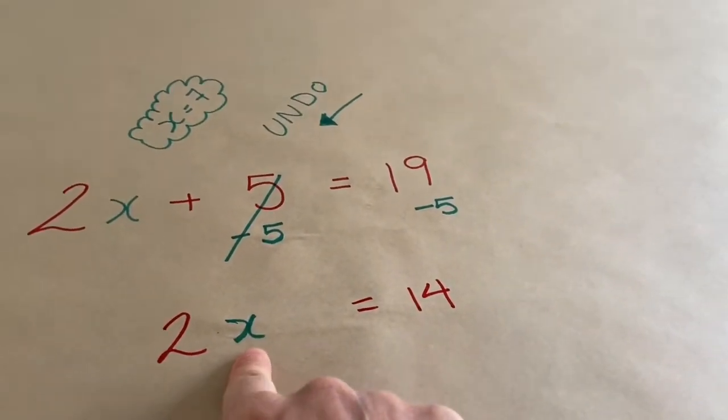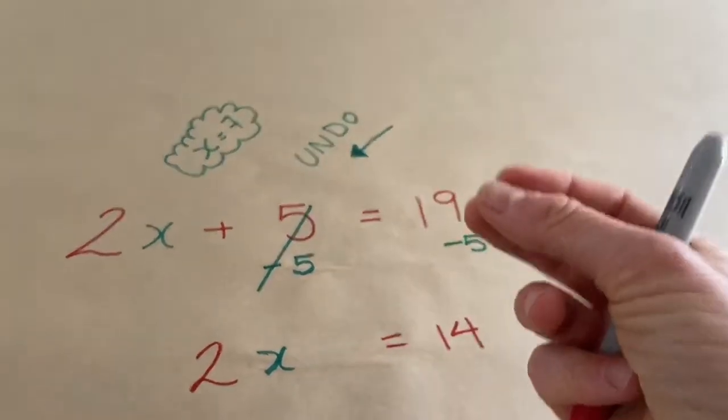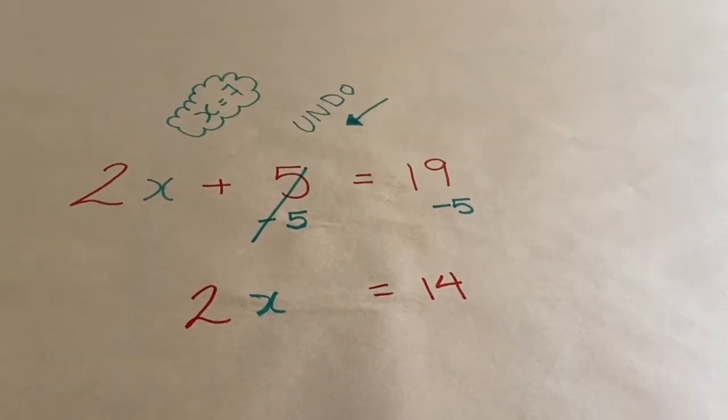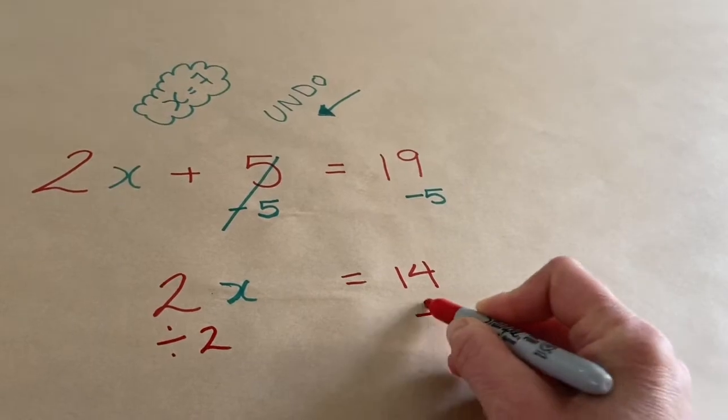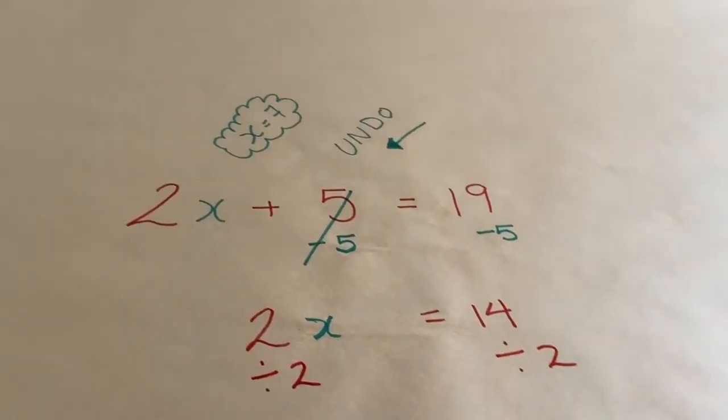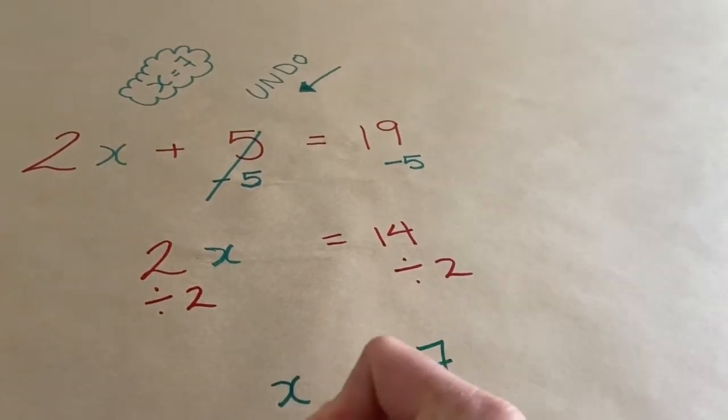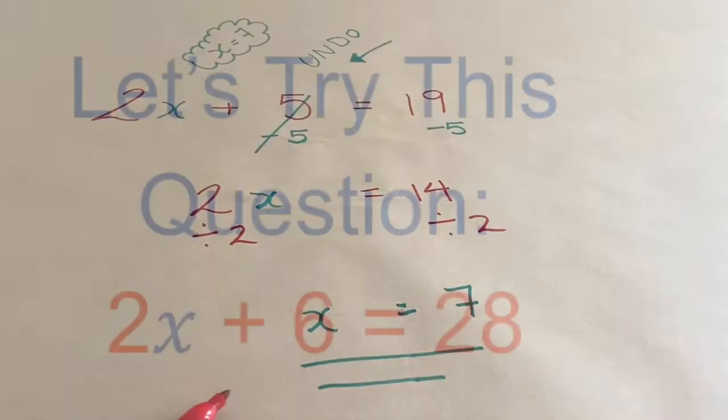So, I took my number, which I know is 7, and I multiplied it by 2 to get 14. I want to undo that or go backwards. So, I want to do the opposite of multiplying by 2, which means I want to divide by 2. And so, that means that x is equal to 7, just like we knew we should get. But this is how you do it with algebra.